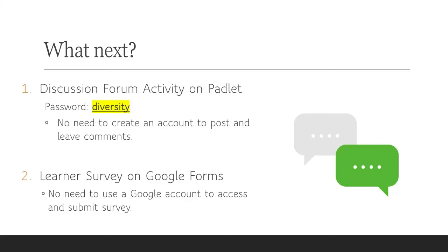Congratulations! We have reached the end of this short version screencast video. If you have not watched the other two short version videos for the diversity quick links and the read around the world map, I strongly recommend that you do. After reviewing all three short version videos, there are only two things left for you to complete this course. I have created a discussion forum activity on Padlet that will ask you to try searching for diverse books on abookandahook.com using any of the three search options taught in this course and to share your search experience.